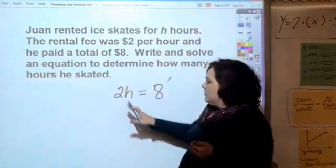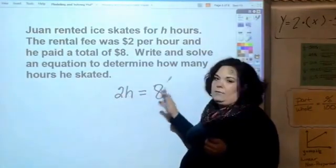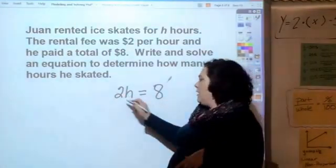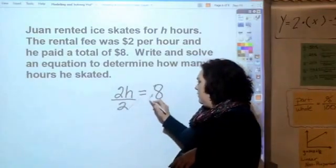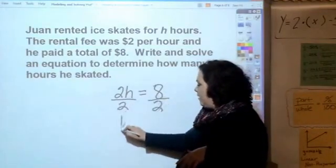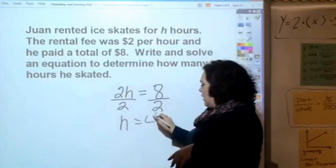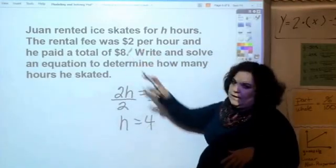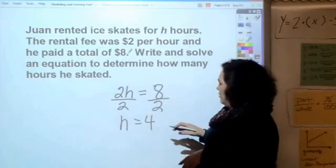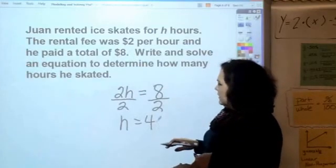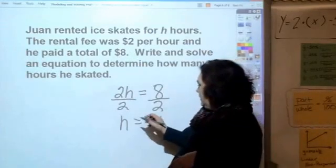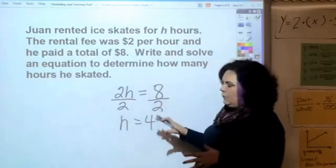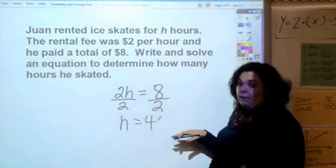You're saying two times what equals eight. To do it mathematically, you would divide by two, and you've probably already done this in your head: h equals four. Put it back in - two times four equals eight dollars, two dollars per hour times four hours. That is how to write an equation and solve it from a word problem.